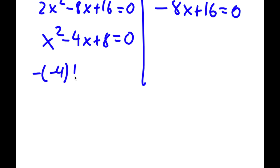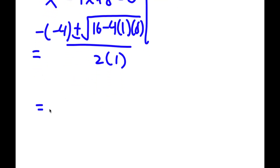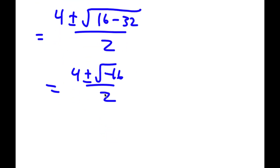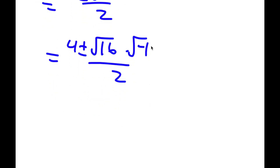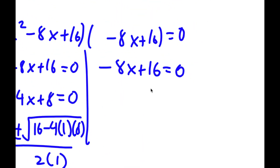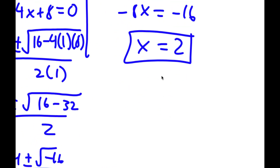Using the quadratic formula: negative b is negative of negative 4, plus or minus the square root of b squared — which is 16 — minus 4 times a, which is 1, times c, which is 8, all over 2a. This equals 4 plus or minus the square root of 16 minus 32 over 2, which is 4 plus or minus the square root of negative 16 over 2. The square root of negative 16 equals 4i, so the result is 2 plus or minus 2i. For negative 8x plus 16 equals 0, I get x equal to 2. So my three solutions are x equals 2 plus or minus 2i and x equals 2.